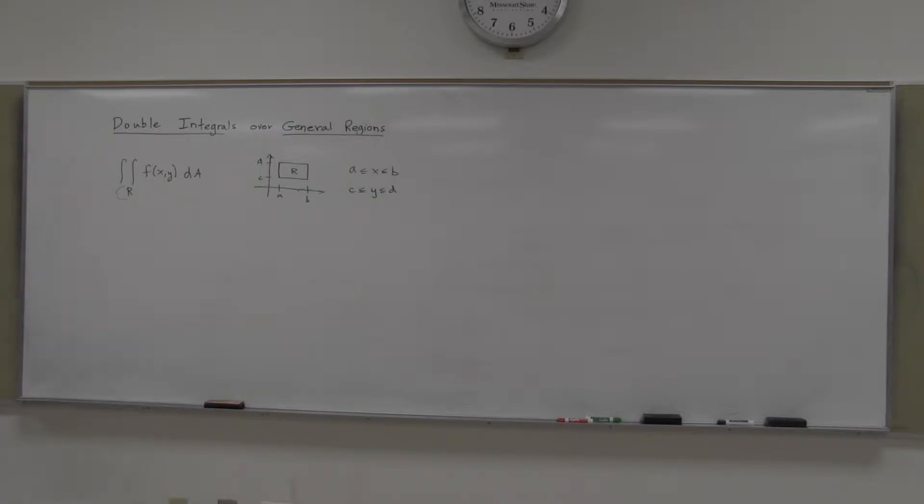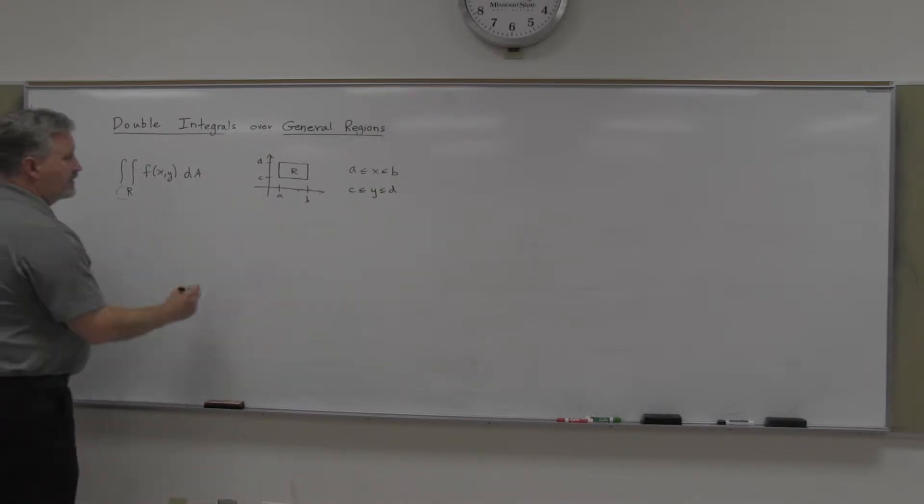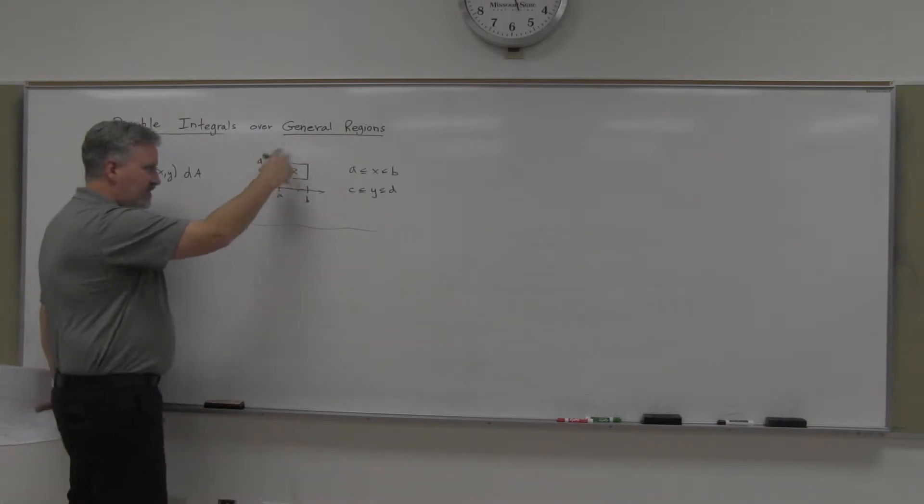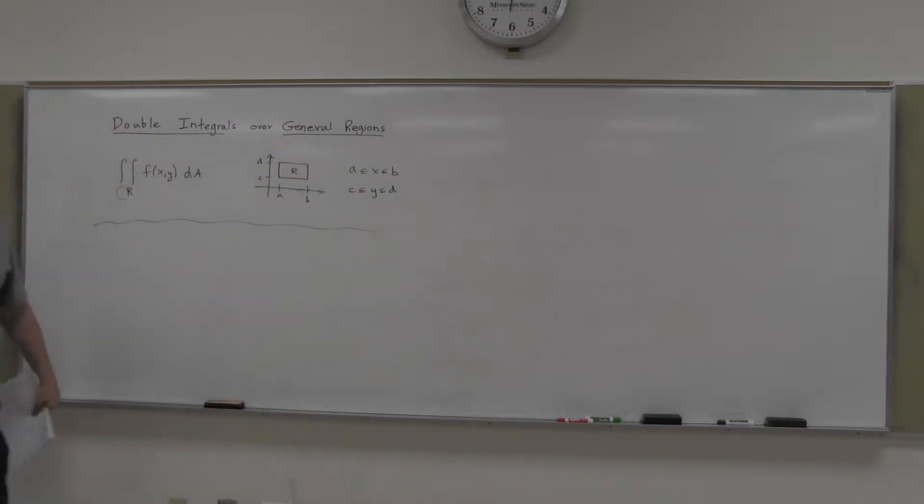Well, what happens when the region we're integrating over is not a rectangle? That's what we're going to discuss today, and the term they're going to use here is a general region. For example, let's say X is going between A and B, but the Y actually here is not going from C to D. Let's say our region here looks more like this. The Y's don't go from C to D, nice neat number C to number D.